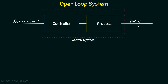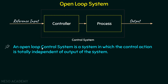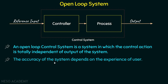Now let's move on to some of the important points of the open loop system. An open loop control system is a system in which the control action is totally independent of the output of the system. This simply means that the input to the system is totally independent of the output. It means we don't have a feedback signal that tells us how to vary the input — when to increase or decrease the input signal in order to get the desired output. In that case, the accuracy of the system depends on the experience of the user.